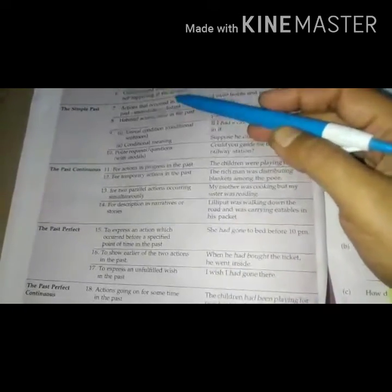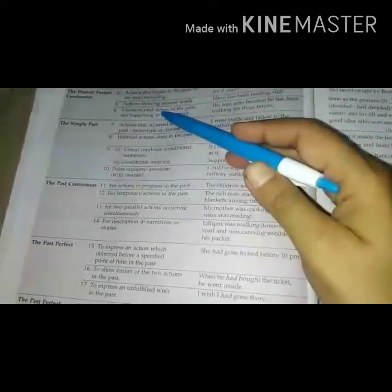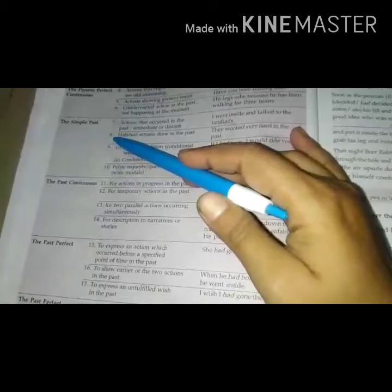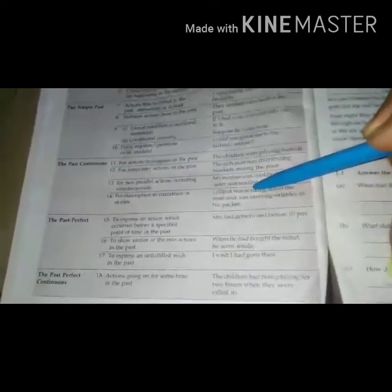The past perfect continuous: Action going on for some time in the past. Example: The children had been playing for two hours when they were called in. In this chapter, all of you understood properly about what is the tense - present or past, present indefinite, past indefinite, present continuous, past continuous, present perfect, past perfect, present perfect continuous, past perfect continuous. All of you will read or write it in your notebook as homework, all the rules point by point with heading, indication also and example. That's all.